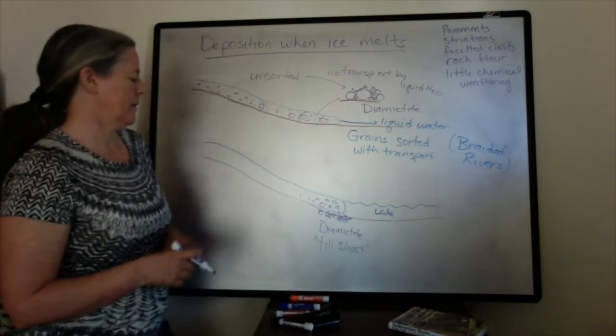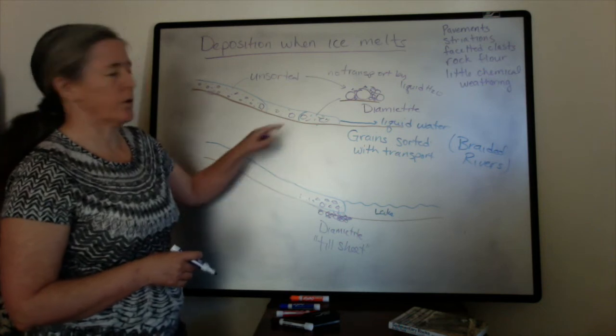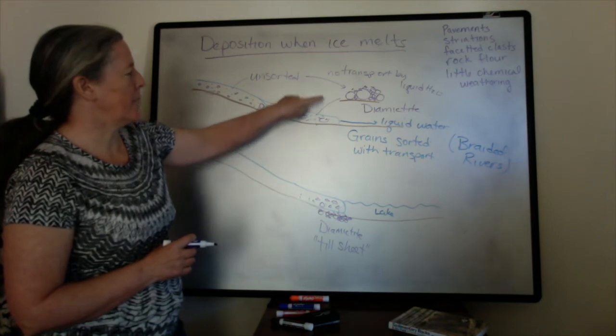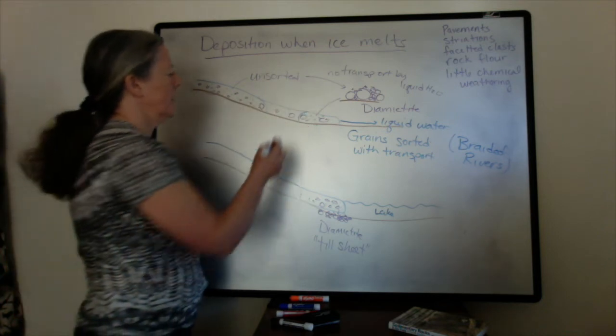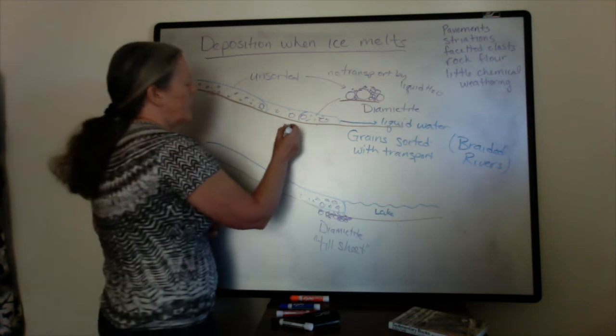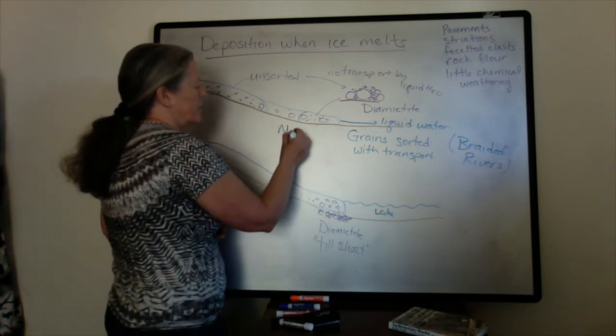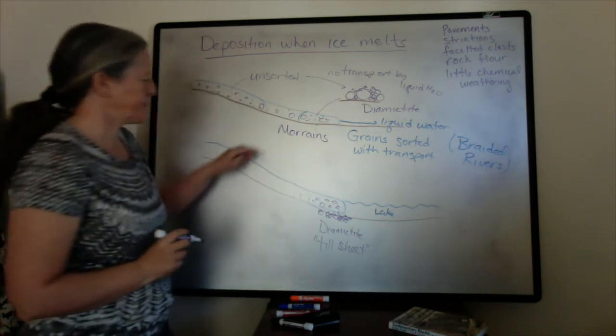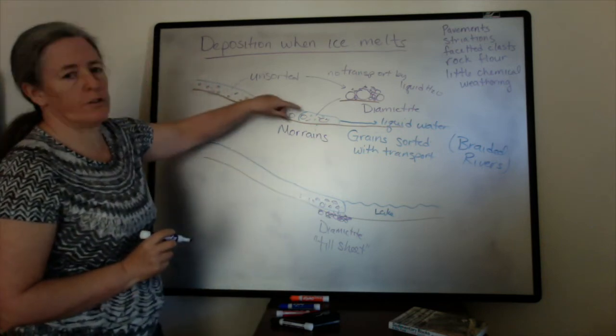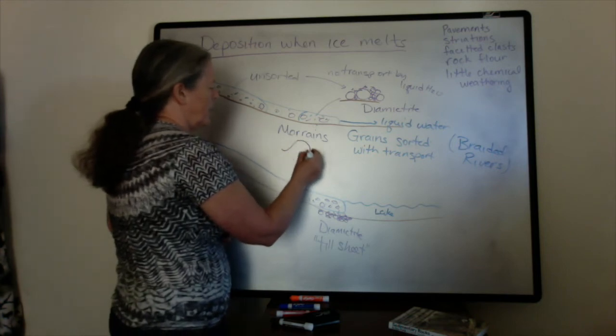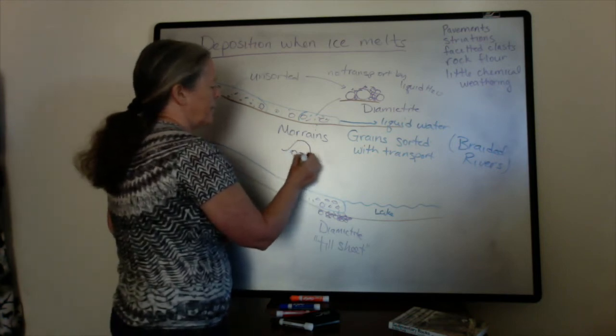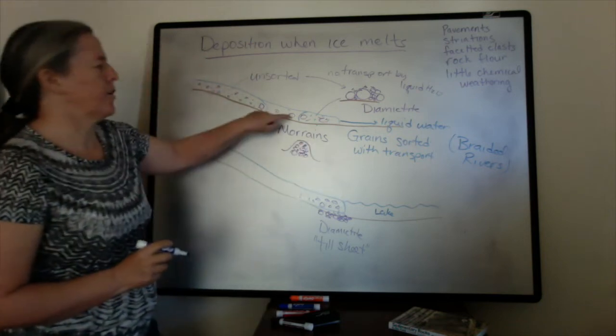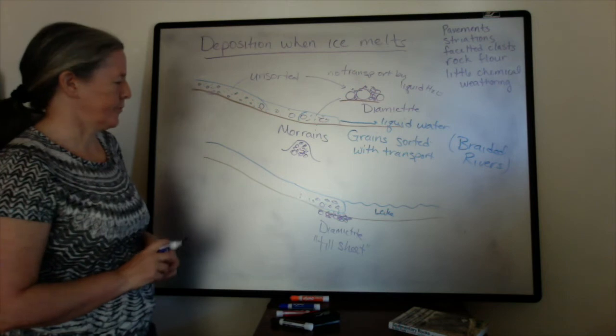So till is the term that's often used for glacial sediment. And that geometry contrasts to what happens when the ice melts just in the zone here. And a lot of times what it creates is moraines. And these tend to be more like piled up zones of diamictite, and often they are influenced by the details of the glacial flow themselves.